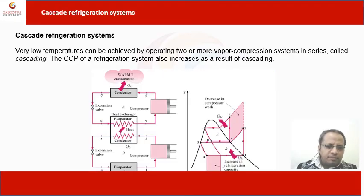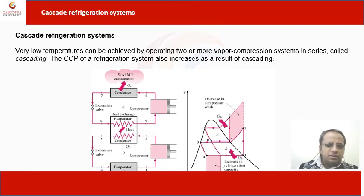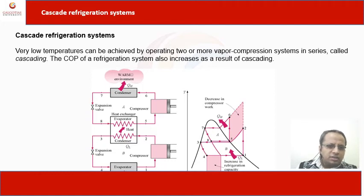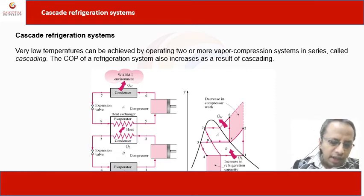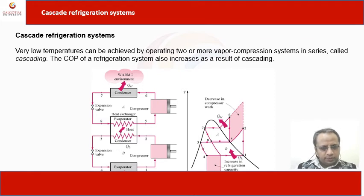Different refrigeration systems are used for domestic, commercial, and cascading purposes. Cascading means multiple stages of the refrigeration system — two stages or three stages. Cascading is generally used for extremely low temperature applications, called cryogenic applications, such as solidification of gases, solidification of CO2, and solidification of H2. In this system, multiple stages of compression are working.